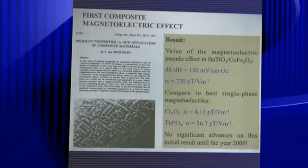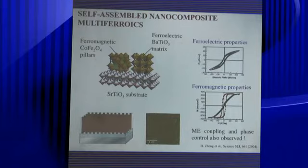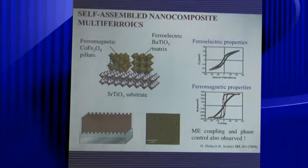Around the year 2000, interest in this subject increased significantly. For example, using a substrate of strontium titanate and placing ferromagnetic pillars — cobalt ferrite — in a ferroelectric barium titanate matrix. In this material, the pillars show both ferroelectric and ferromagnetic properties, as observed in a paper by Zeng published in Science in 2004.